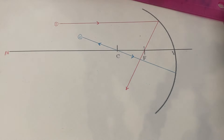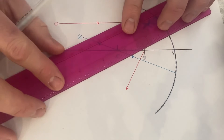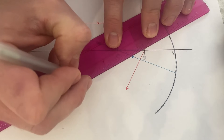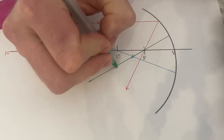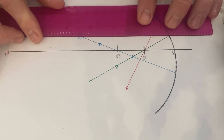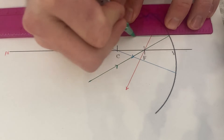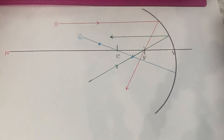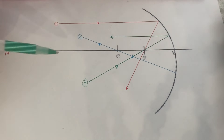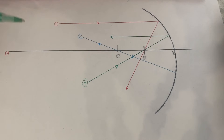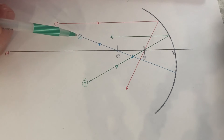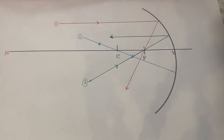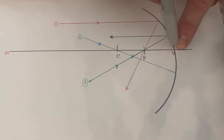Ray number three: a ray passing through the focus will reflect back parallel to the principal axis. So if I have a ray that comes up here through the focus — don't forget to include the direction of travel — it will bounce back parallel to the principal axis. You might notice rays one and three are basically the exact reverse of each other: ray one goes in parallel and bounces back through the focus, while ray three goes through the focus and bounces back parallel.